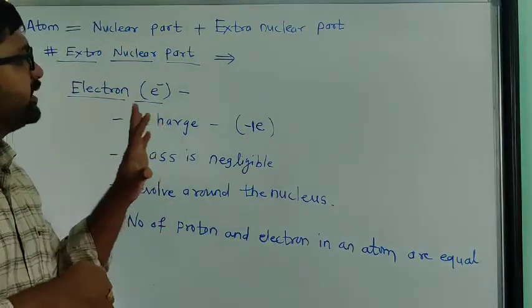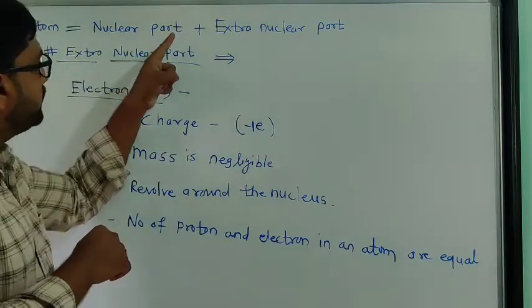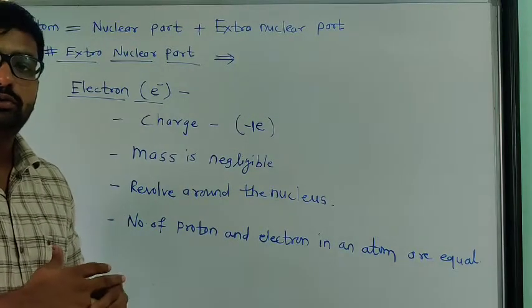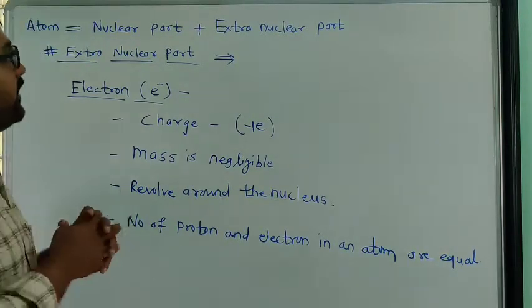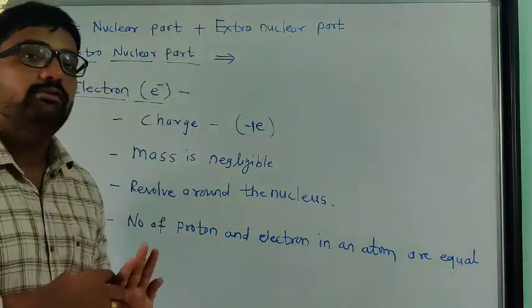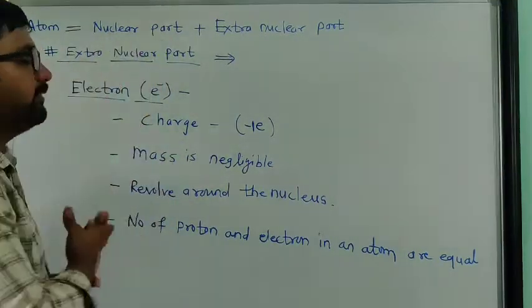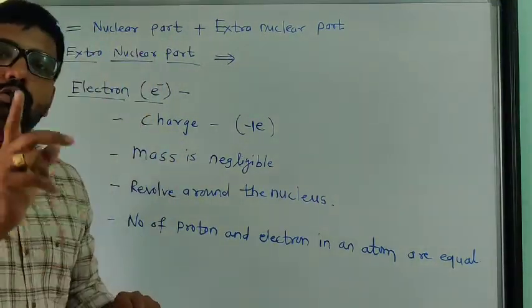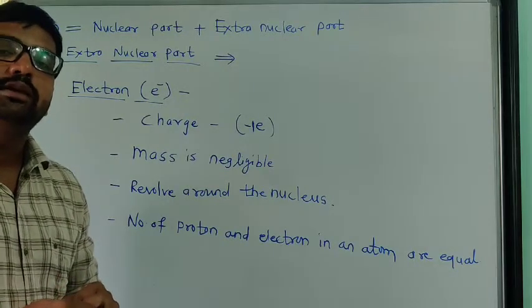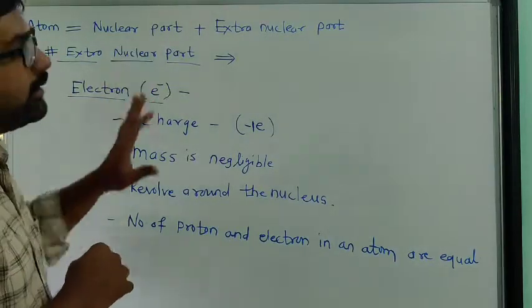Up to last lecture, we have studied that atom is made up of a nuclear part and an extra nuclear part. If we divide the atom into two different groups, one is the nuclear part and one is the extra nuclear part. In the nuclear part, there are proton and neutron which are the constituents of the nuclear part. The nuclear part is made up of proton and neutron.